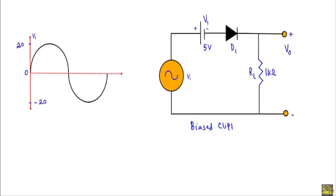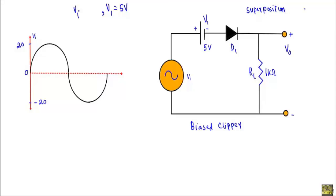In this clipper circuit we have the bias voltage V1 of 5 volt and the applied voltage vi which is varying between plus 20 and minus 20 volt sinusoidally. To identify the transition voltage when we have more than one energy source in a circuit, we can use the concept of superposition to analyze the behavior for each source in the circuit.